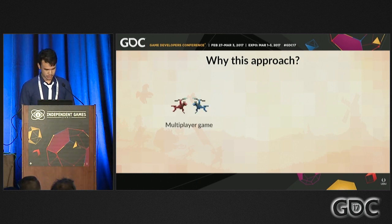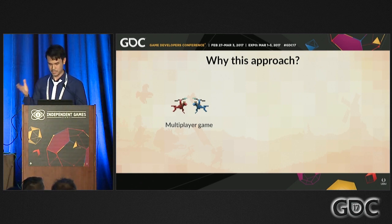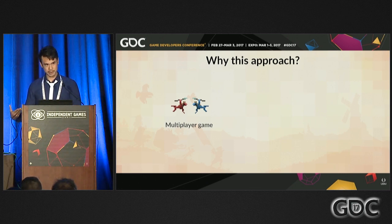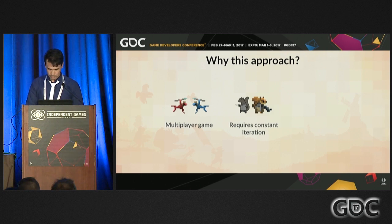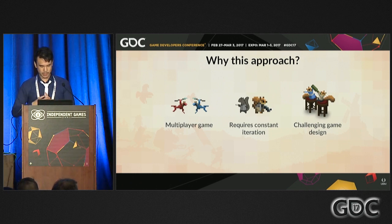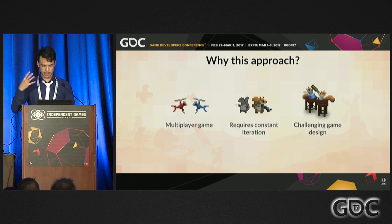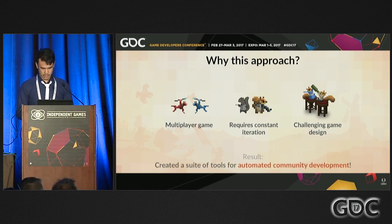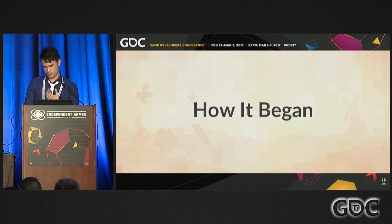Why did we take this approach? Tooth and Tail is a multiplayer game, and for indies, multiplayer games are infamous for the chicken-and-egg problem — if nobody's playing, nobody buys, but if nobody buys, nobody plays. We knew we needed to seed the community first. We also knew we'd require constant iteration, because if AAA companies struggle with balance, how could a small indie team handle it? And we wanted to take all the concepts of RTS games like Command and Conquer, StarCraft, and Age of Empires and make them accessible without losing the feel.